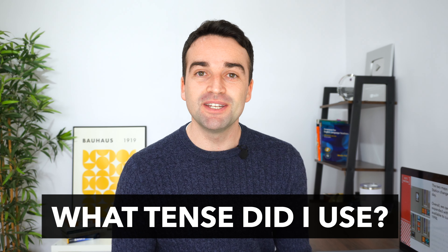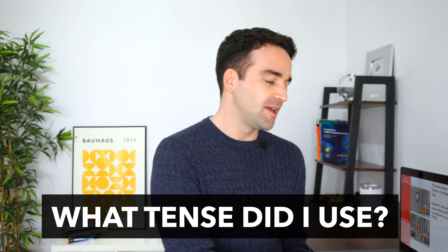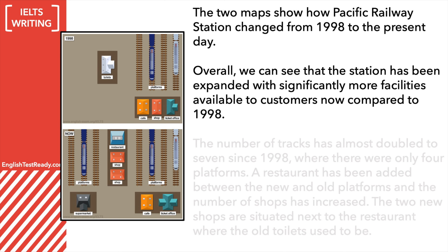Did you notice the tense used in this answer? Of course it was the present perfect. This map describes a past and present date, so we want to use the present perfect to describe the changes — because we're describing actions that happened in the past which are still present and affecting now.